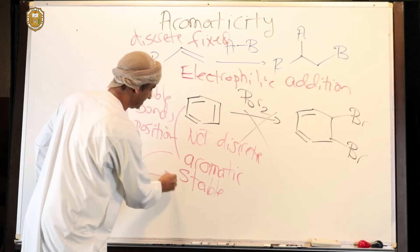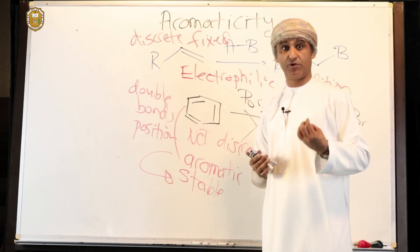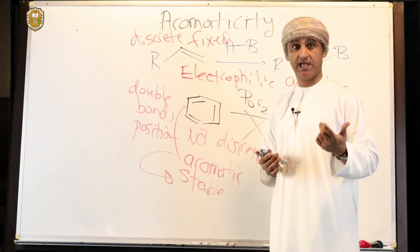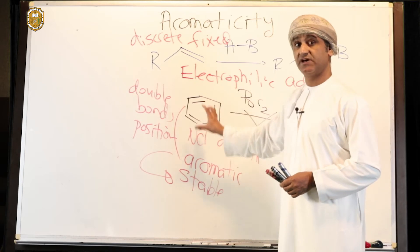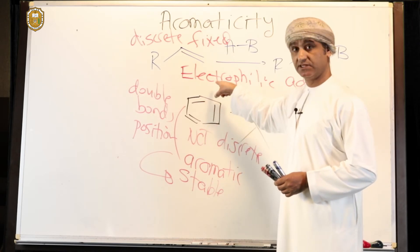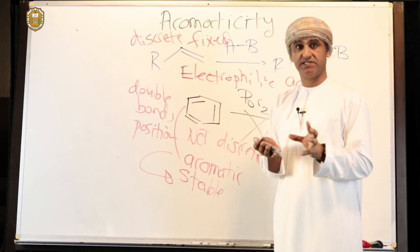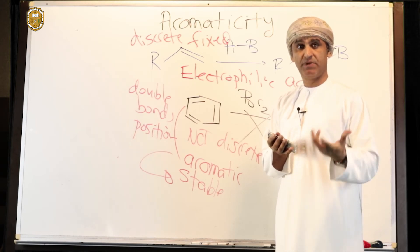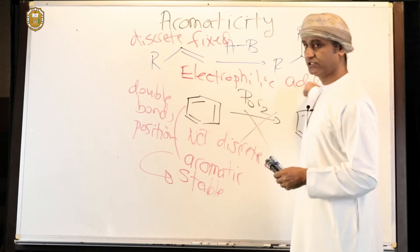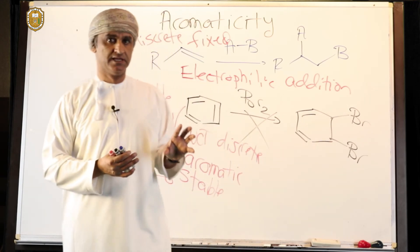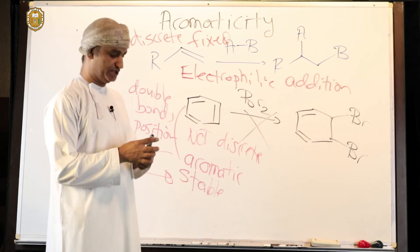Benzene fulfills the four requirements: it is cyclic, conjugated, flat, and obeys the 4n+2 Hückel rule. Because it is aromatic, it is stable — a very, very stable molecule. It is because of this continuous cyclic conjugation inside the pi system of the benzene ring, which makes the benzene ring very stable and not accessible by electrophiles under normal conditions. Benzene does not undergo electrophilic addition reactions; it undergoes electrophilic aromatic substitution reactions.